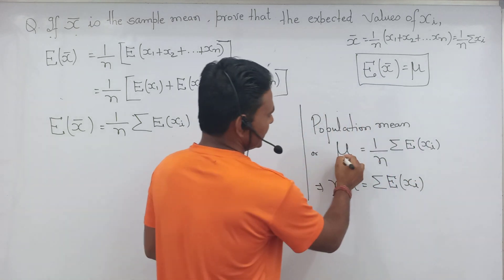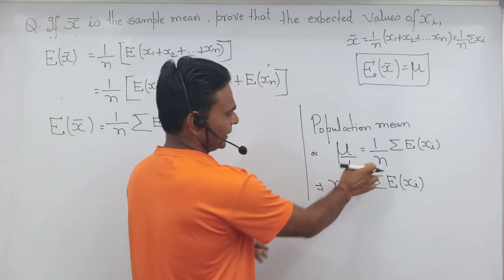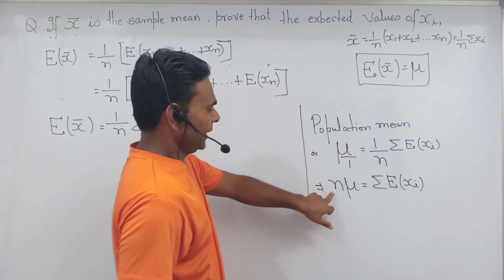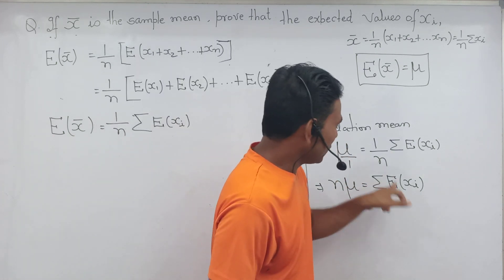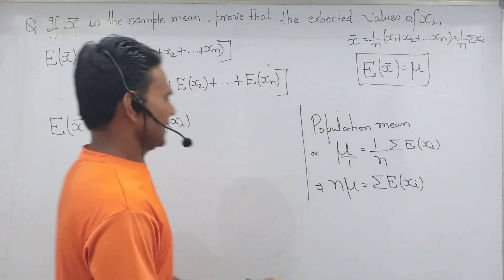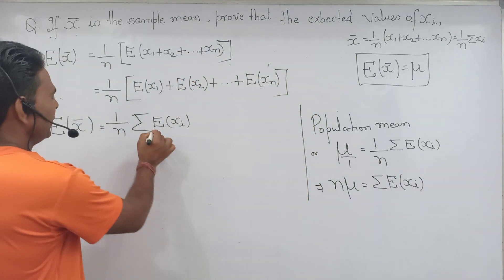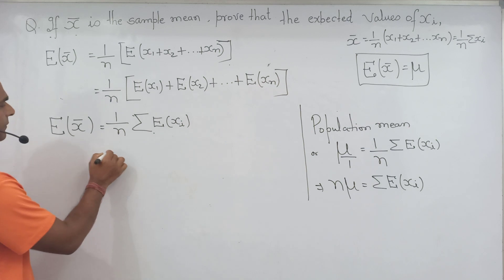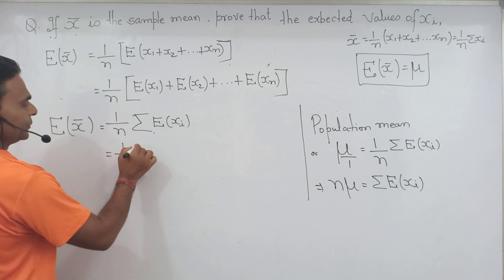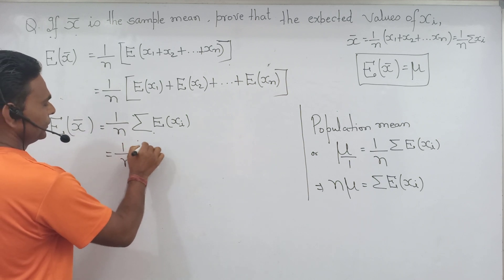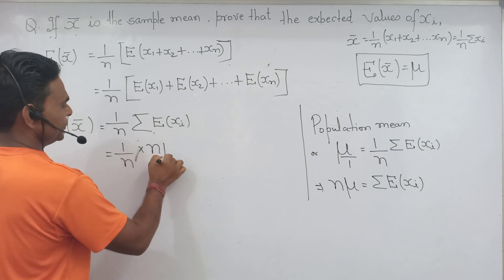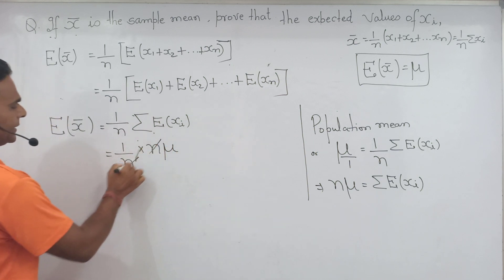Agar is equation ko main cross multiplication karta hoon, n times μ equal to summation of expected value of X_i. Yah yahaan guna, iske niche kuch to nahin hai, to 1 to ho sakta. To yah isse kya hai, n times μ equal to expected, summation of expected value of X_i.